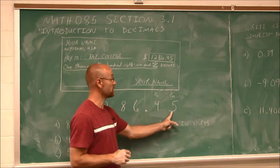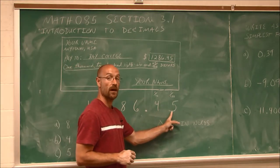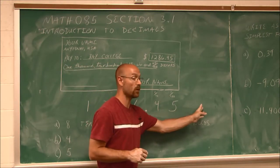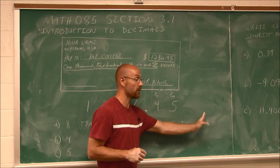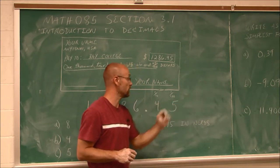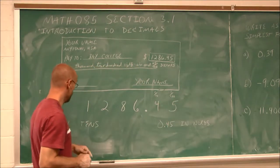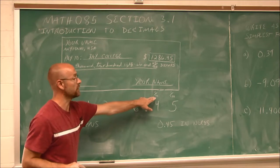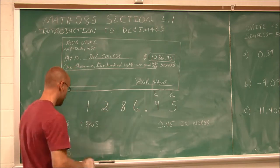So our place values: this is the tenths, the hundredths. Another factor would be one thousandths, and so on — ten thousandths, one hundred thousandths. So the 4 we see is in the tenths.